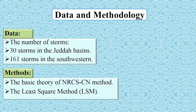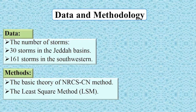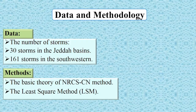For data and methodology, we have about 30 storms in Jeddah basins, while in the southwestern part we have about 161 storms. This is rainfall-runoff data, which is difficult to find in arid basins since runoff data is rarely available. The methods used in this study include the NRCS CN method and the least squares method to estimate the parameters.